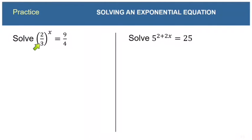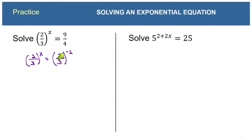Now let's try (2/3)^x = 9/4. We need to relate 9/4 to a power of 2/3. Squaring 2/3 gives 4/9, which is the reciprocal of 9/4. A negative exponent accomplishes a reciprocal, so 9/4 = (2/3)^(-2). Now we have (2/3)^x = (2/3)^(-2). Since the bases are the same, x = -2. Once you see the trick of it, that one's almost too easy.